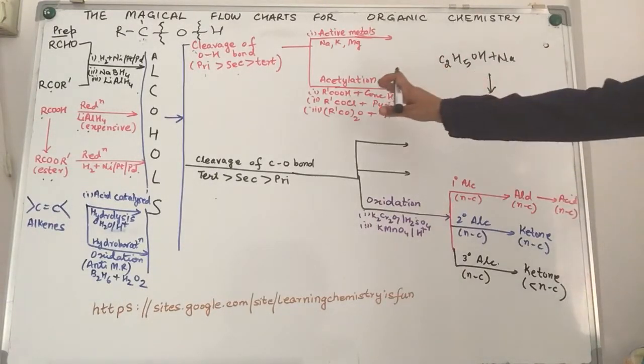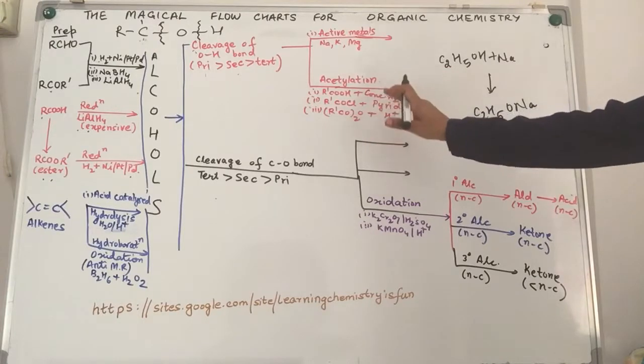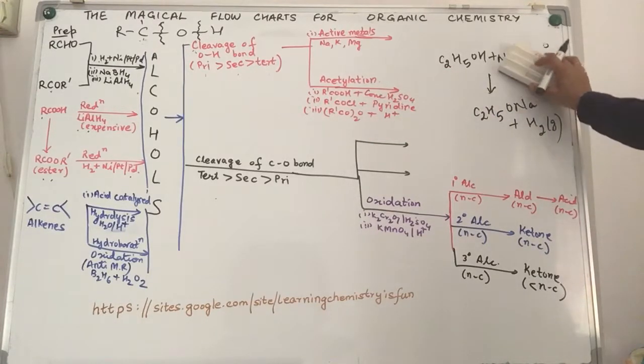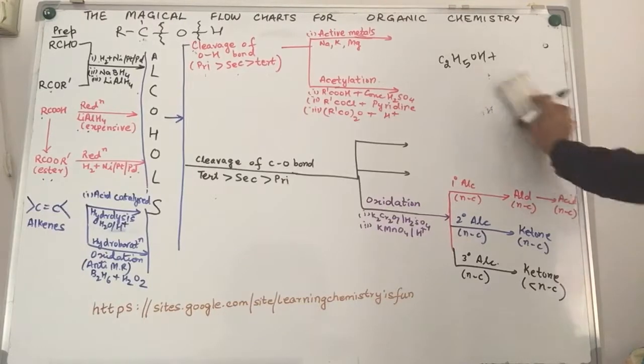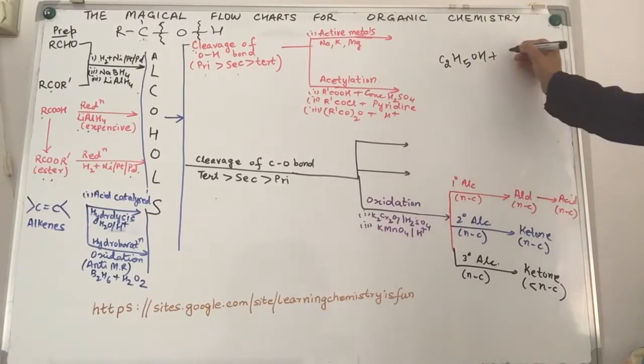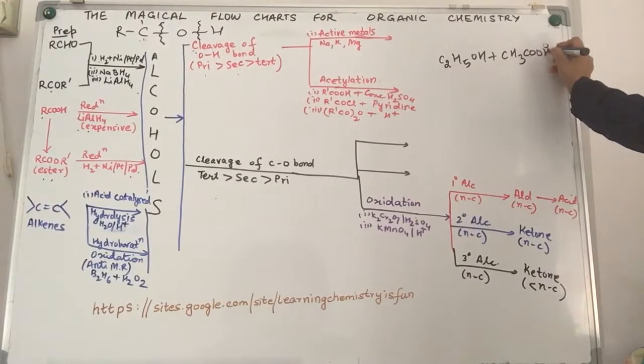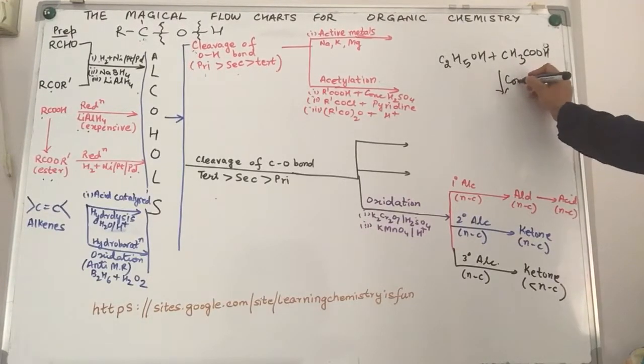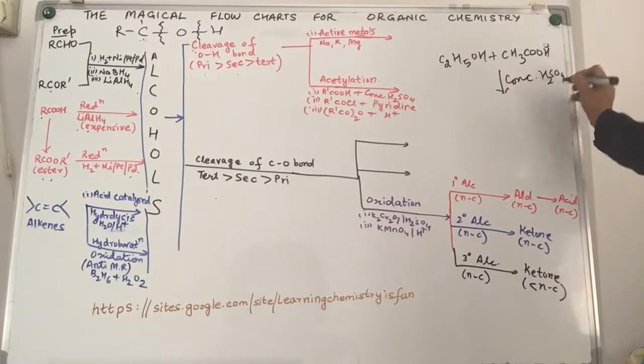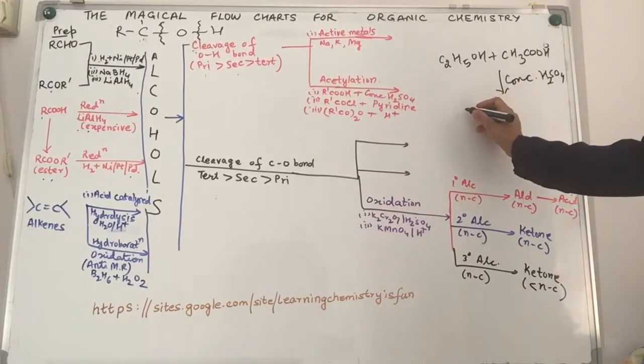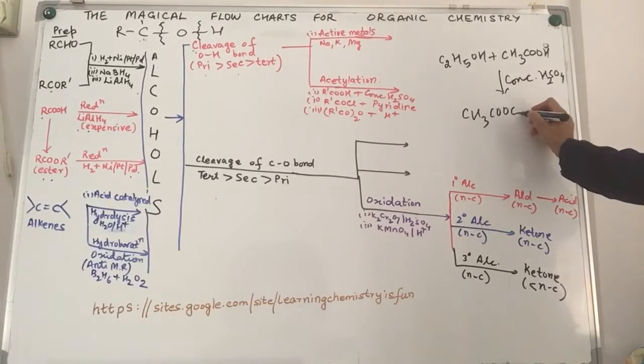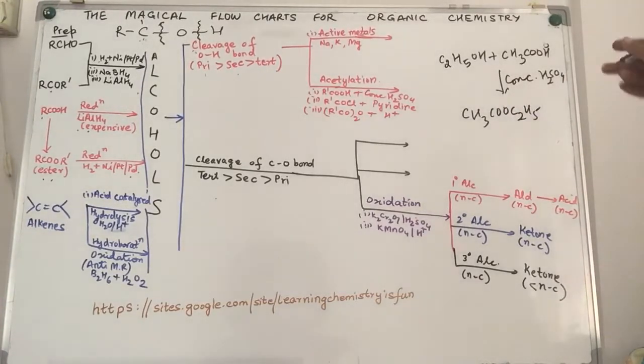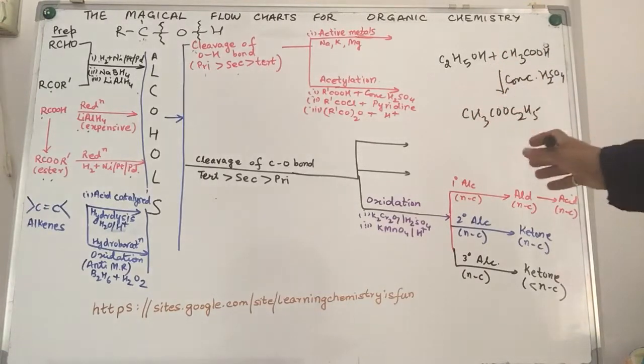Come to acetylation. Acetylation can be done with carboxylic acid, acetyl chloride, acetic anhydride. So the next reaction you can write is C2H5OH plus CH3COOH in the presence of concentrated H2SO4. If you notice, we are not referring to any book or anything as such, and we get CH3COOC2H5 as our product. So we have esterification or acetylation as the general name given to this kind of reaction.